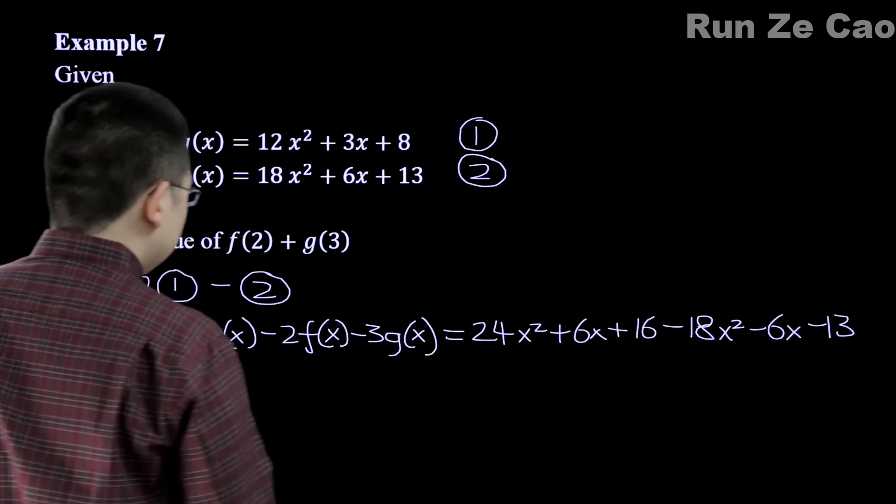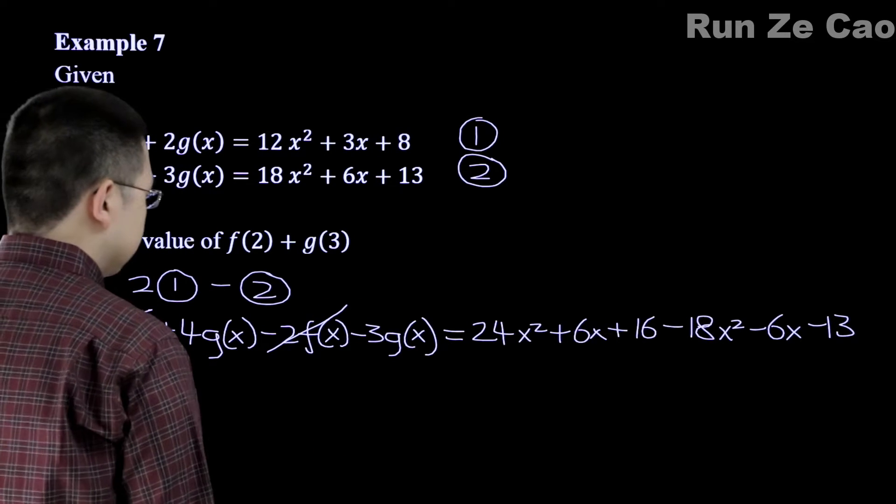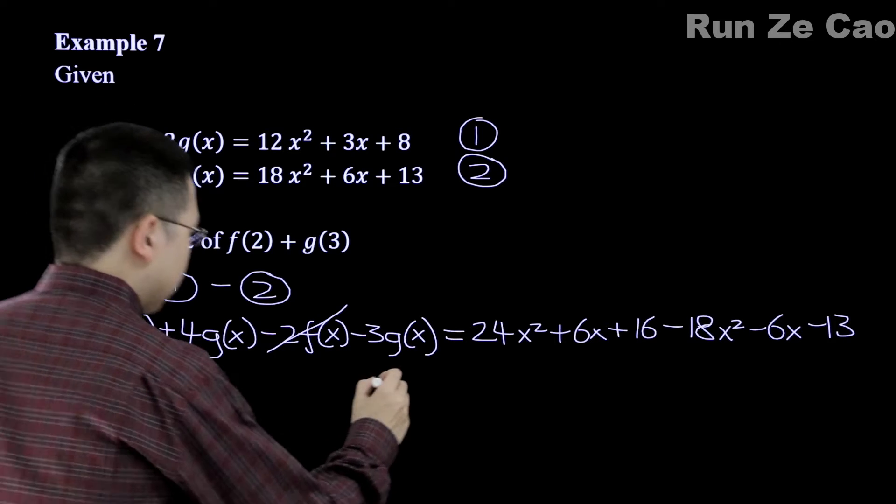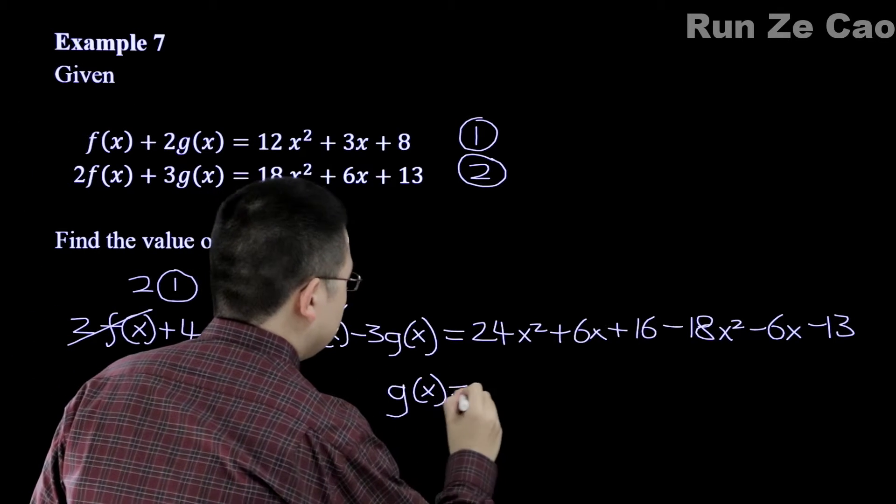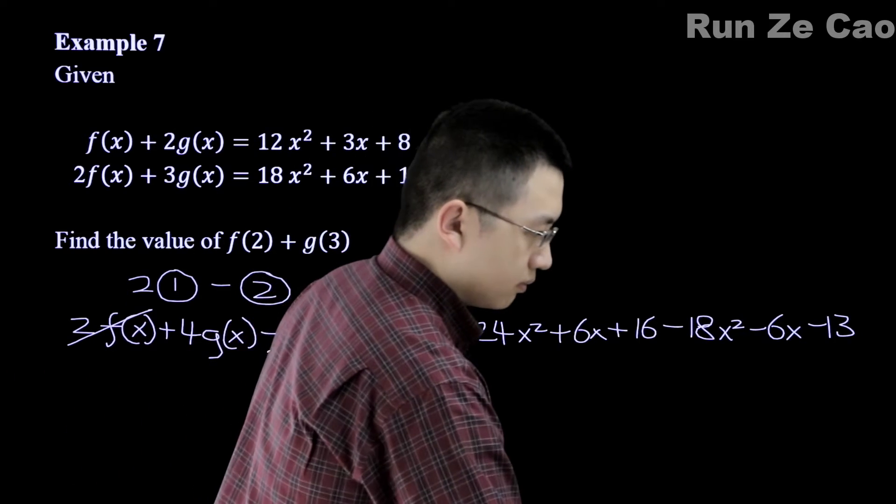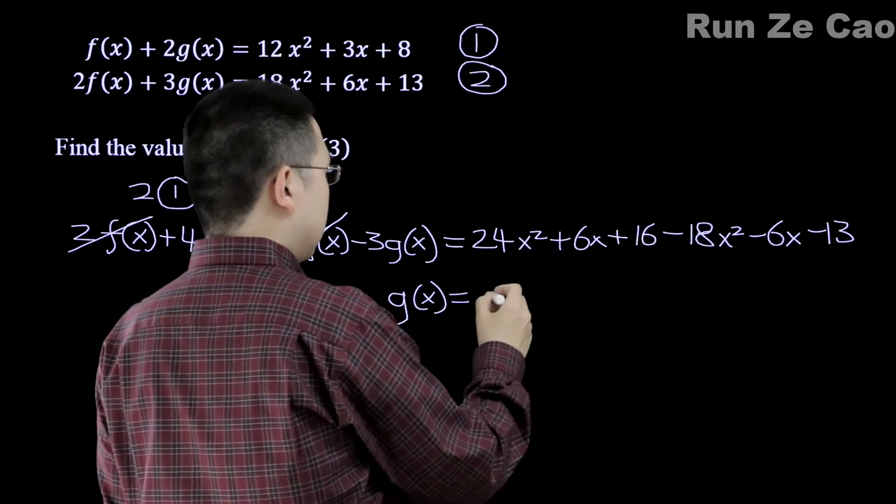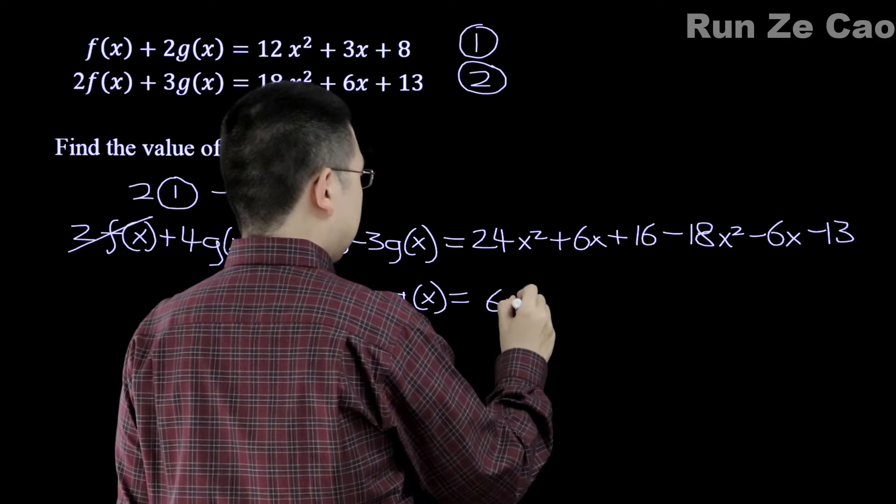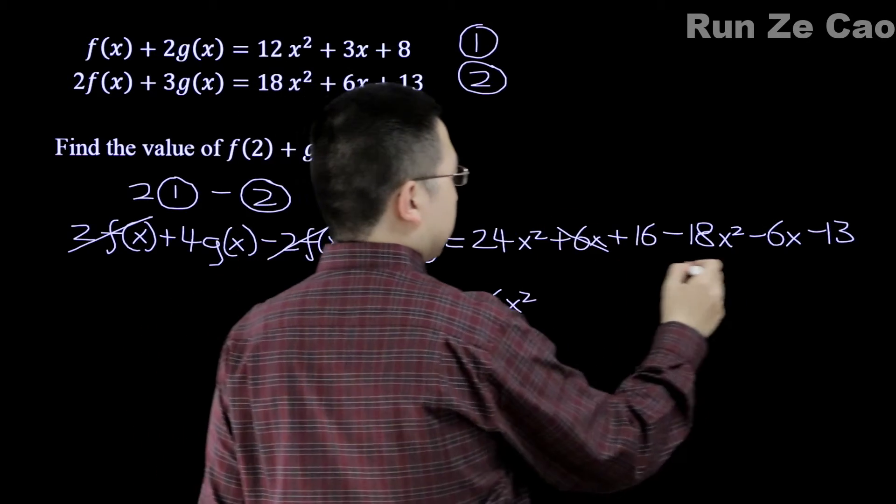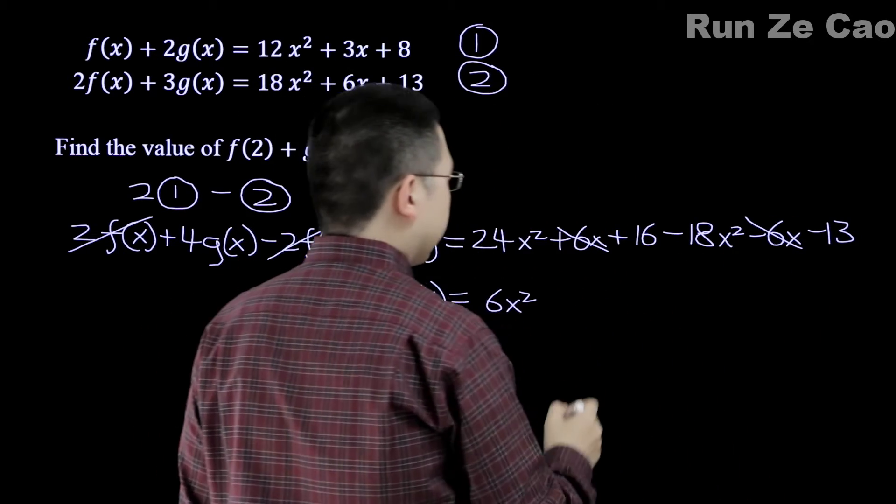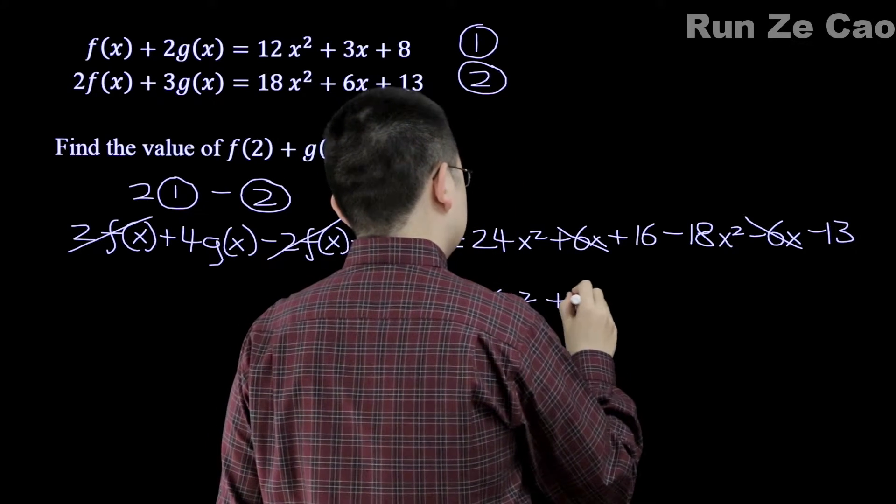So what this comes out to, first of all we cancel out the f(x)'s. This leaves us with g(x) is equal to 24x² minus 18x², that is 6x². And the -6 and +6 happen to cancel out very nicely. So plus 16 minus 13, that is plus 3.